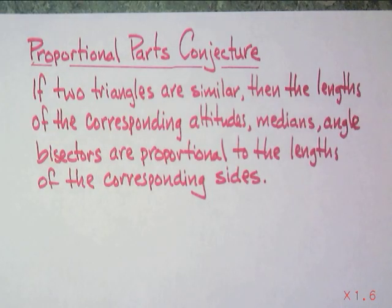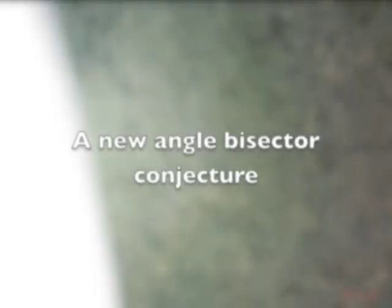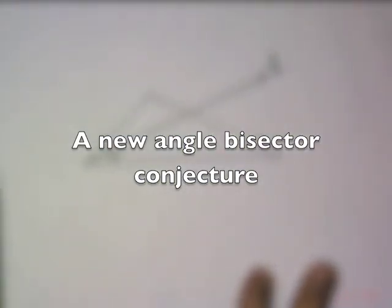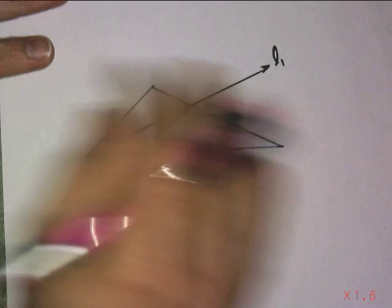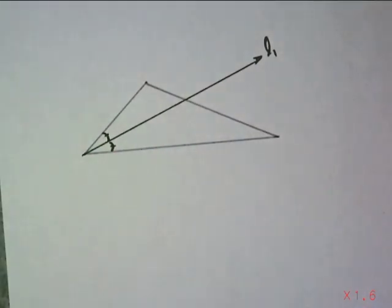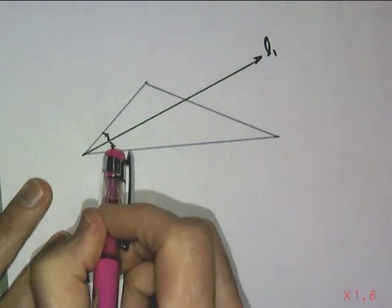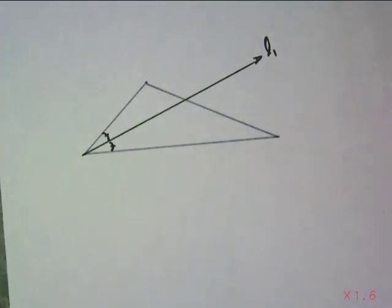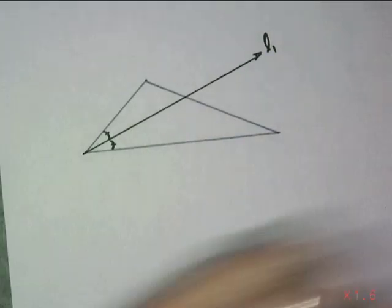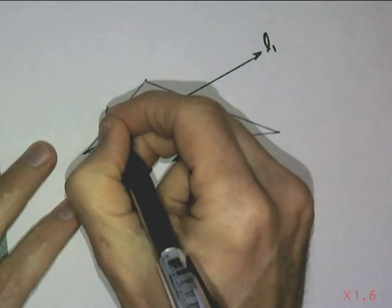Now let's do something completely different. I don't have similar triangles here, but I'm going to use similar triangles. I am going to take any triangle and bisect one of its angles. I've got this triangle and I've bisected one of the angles. Let's put some side lengths on here using variables. Let's make this side x and this one y, and the angle bisector cuts the opposite side — not right in the middle — into a small side a and a long side b.